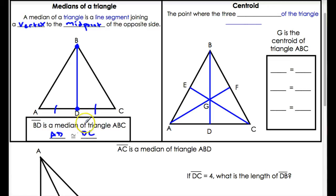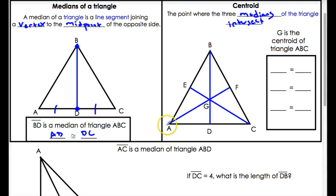What is a median? The second concept is a centroid — the point where the three medians of a triangle intersect. So if we know that BD, AF, and EC are all medians, G would be the centroid, because this is the point where these three medians intersect.